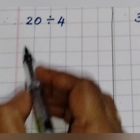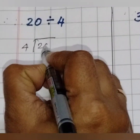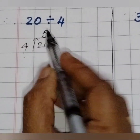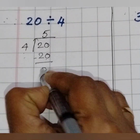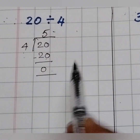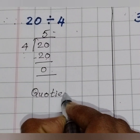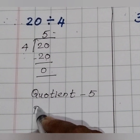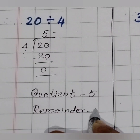Now coming to the next question: 20 divide by 4. 4 is written outside, 20 is written inside. 4 fives are 20. 20 minus 20 is 0. The quotient is 5 and the remainder is 0.